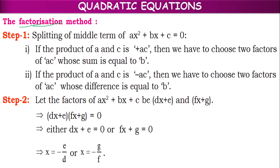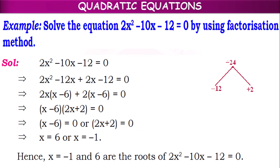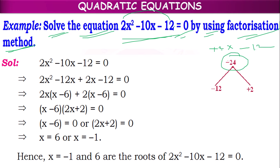In factorization method: in step one, how to split the middle term — that is the concept. In step two, if you know the factors, how to find the x value from the factors — that is step two. Let us solve some examples based on step one and step two. Solve the equation 2x² − 10x − 12 = 0 by using the factorization method. We have to take the product of AC: A value is +2, C value is −12. If you multiply, you get −24, to be split into two factors such that their sum is equal to the middle number, which is −10.